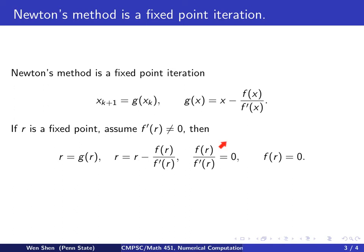Since f prime of r is not 0, this leads to the conclusion f r equal to 0. That is, the fixed point for this iteration is actually a root for the function f.